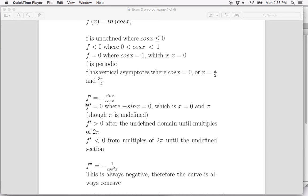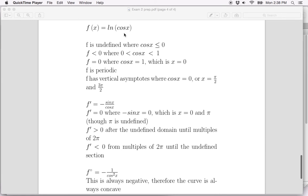Then we look at the first derivative. We take the derivative of ln(cos x) and get 1/(cos x) times the derivative of cos x, which is -sin x. So we have f' = -sin x / cos x. That function equals 0 when -sin x = 0, so that's where x = 0 and where x = π, but π is in the undefined zone. Then of course 2π and so on, because it's periodic.